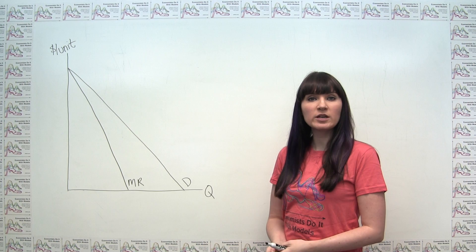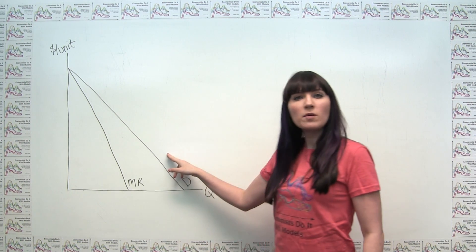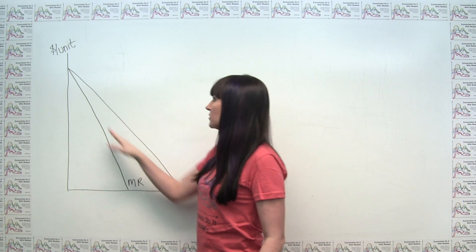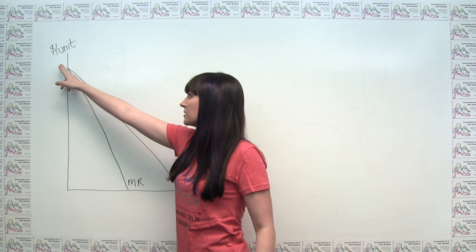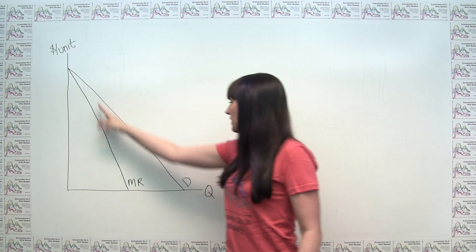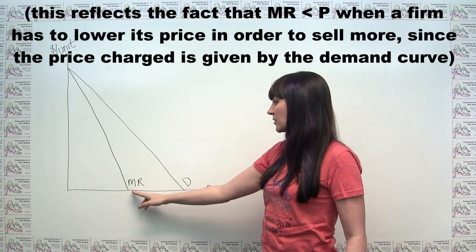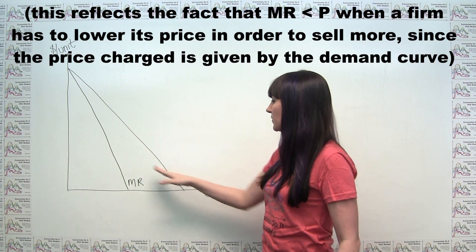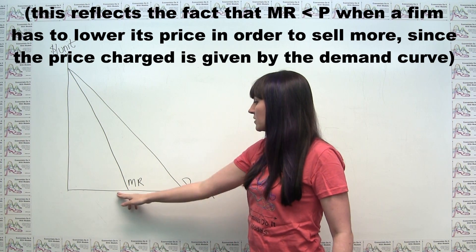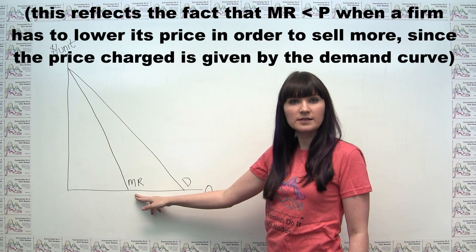Graphically, when we're dealing with a straight-line demand curve, what we notice about marginal revenue is that it starts at the same point as the demand curve on the vertical axis, but it's actually twice as steep. So we get something that starts at the same point but then intersects at a different point on the horizontal axis.